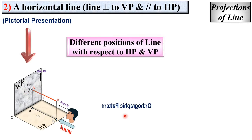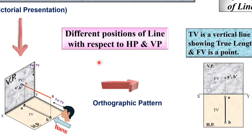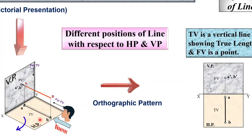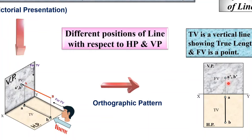Now for the orthographic pattern: the front view is a single point A dash B dash above the XY line. The horizontal plane always rotates 90 degrees clockwise, so the AB point moves below the XY line. The top view is a vertical line showing the true length of line AB, while the front view is a point.